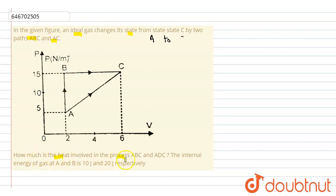The internal energy at state A is 10 joules and at state B is 20 joules. So how can we solve this question? How can we find this? From here we can write: